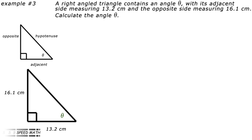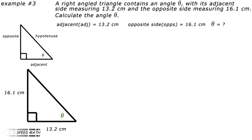Now for the third type: you are given the opposite side and the adjacent side and are required to work out the angle. Example 3: a right-angle triangle contains an angle theta with its adjacent side measuring 13.2 centimeters and the opposite side measuring 16.1 centimeters. Calculate the angle theta. The adjacent side equals 13.2 cm, the opposite side equals 16.1 cm, and we need to find angle theta. The answer is to two decimal places.